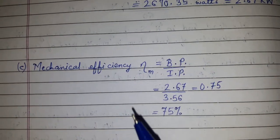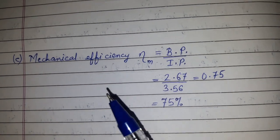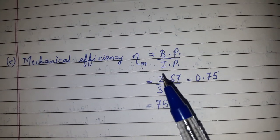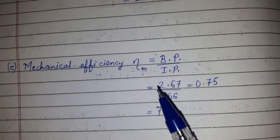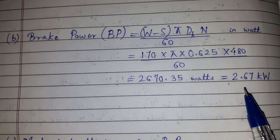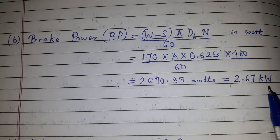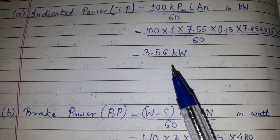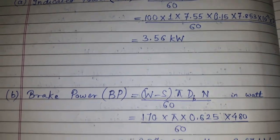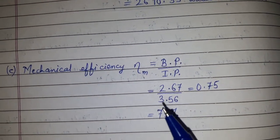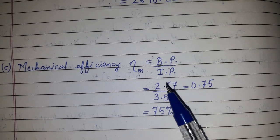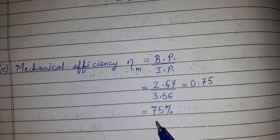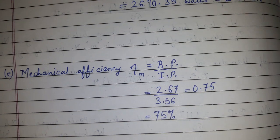Finally, mechanical efficiency = BP / IP = 2.67 / 3.56 = 0.75, which is equal to 75%.